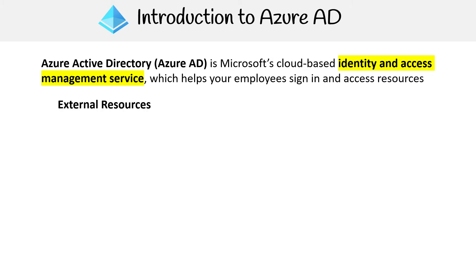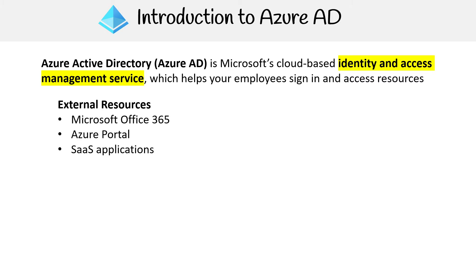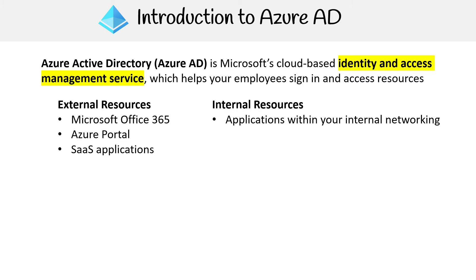Those resources could be external, like Microsoft Office 365, the Azure portal, or SaaS applications — or internal resources, such as applications within your internal network or access to workstations on premise.